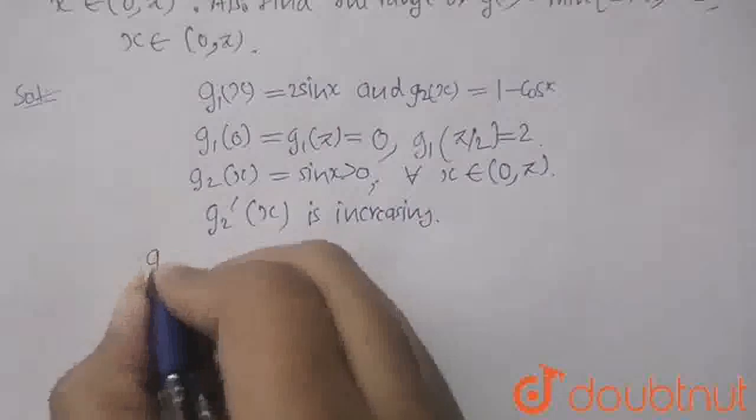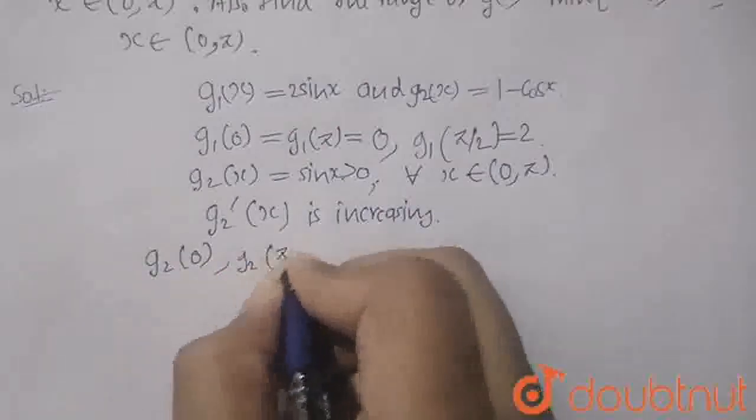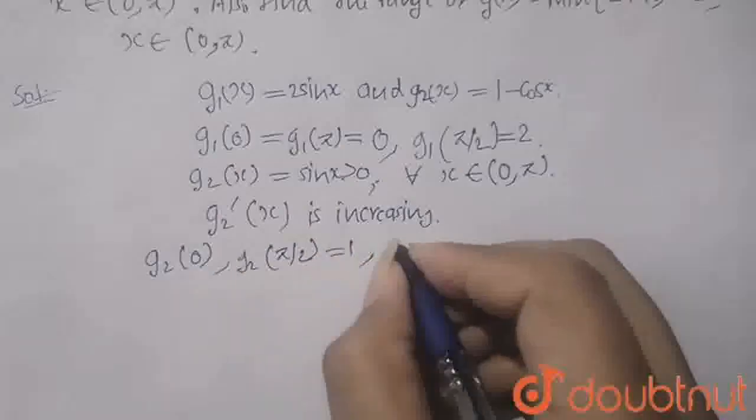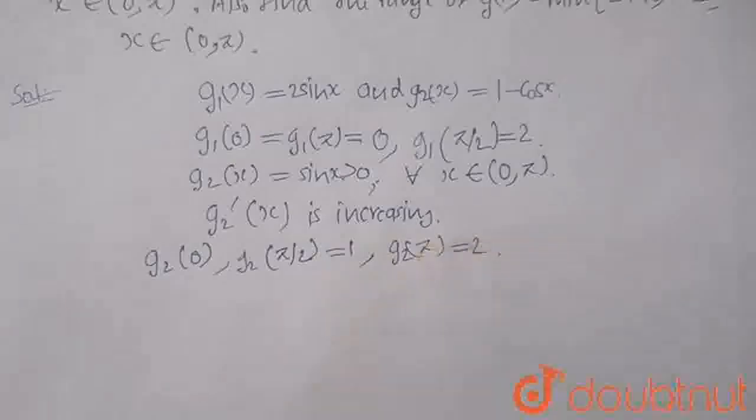And so, when you put g2 of 0 and g2 of pi by 2, you will get here 1. And here g2 of pi equals to 2.